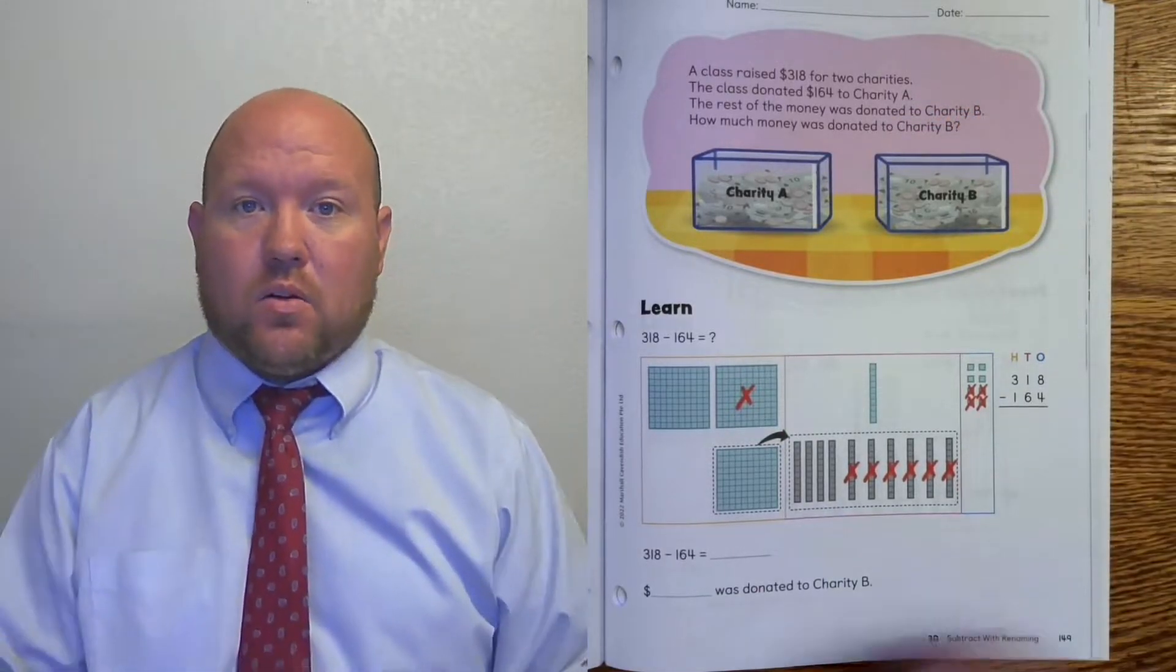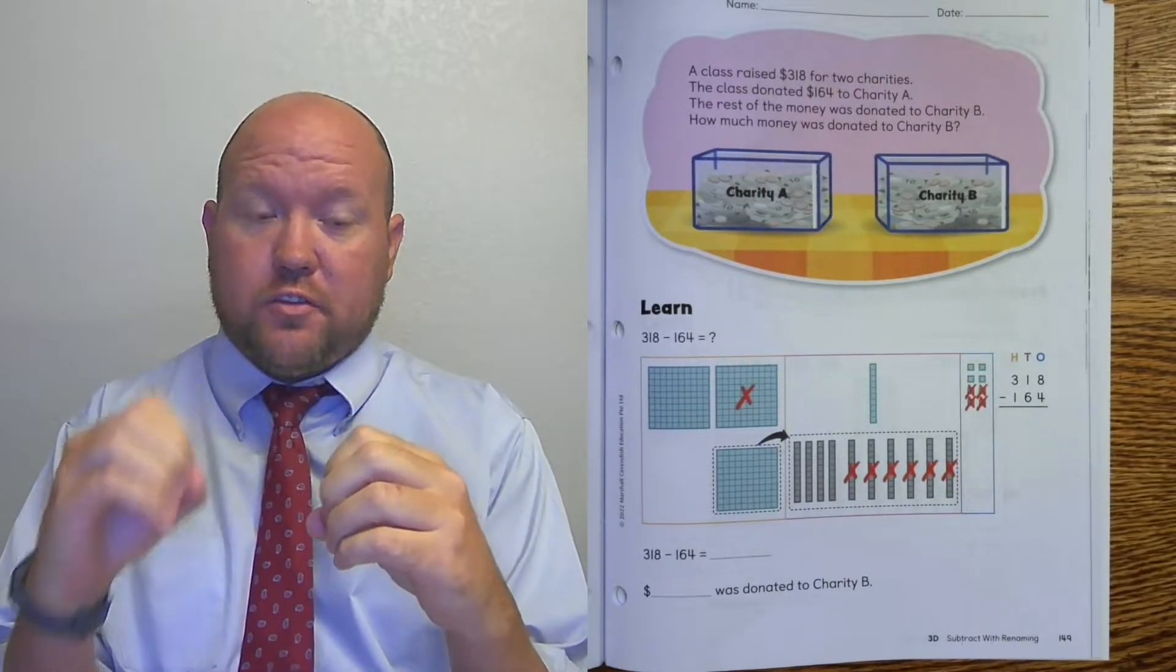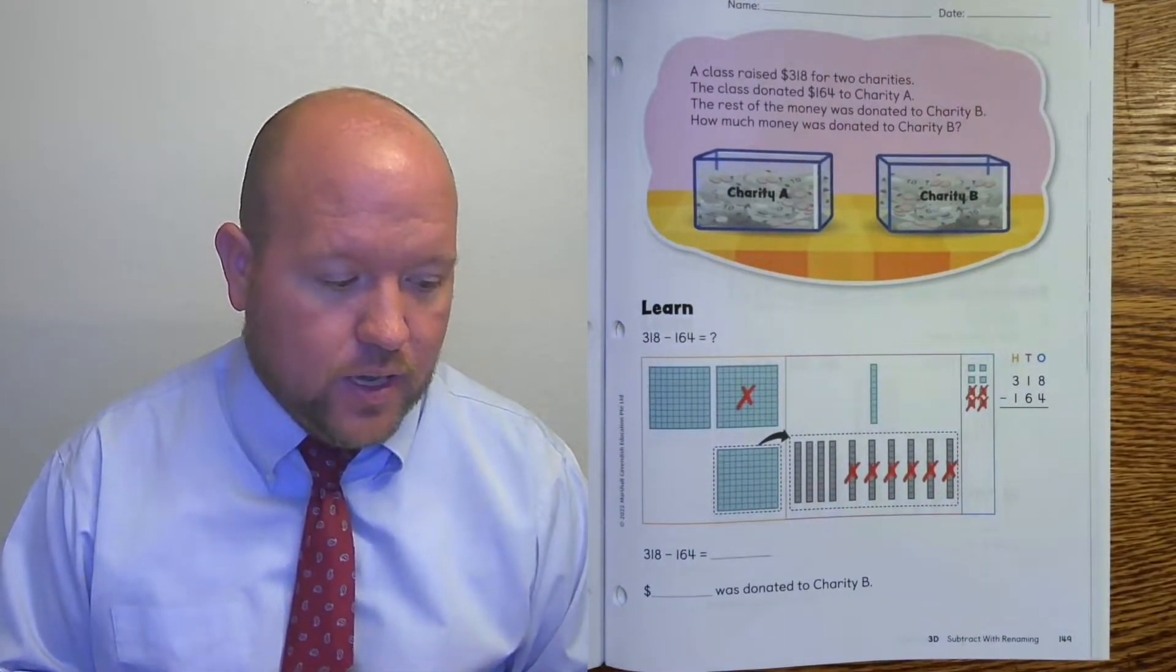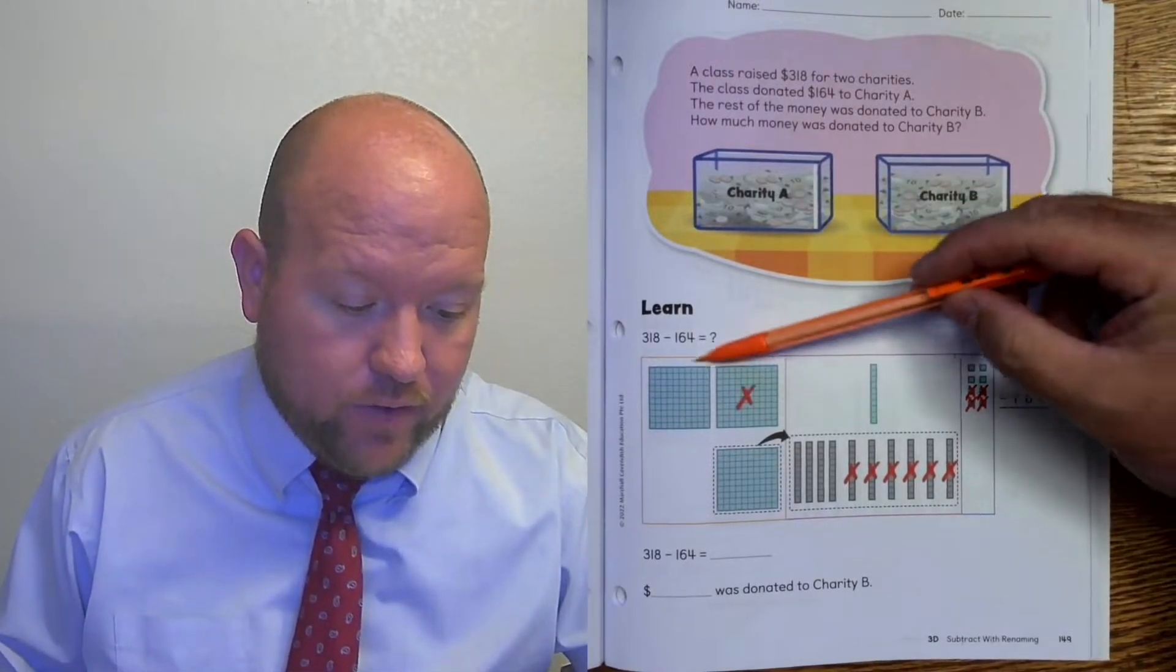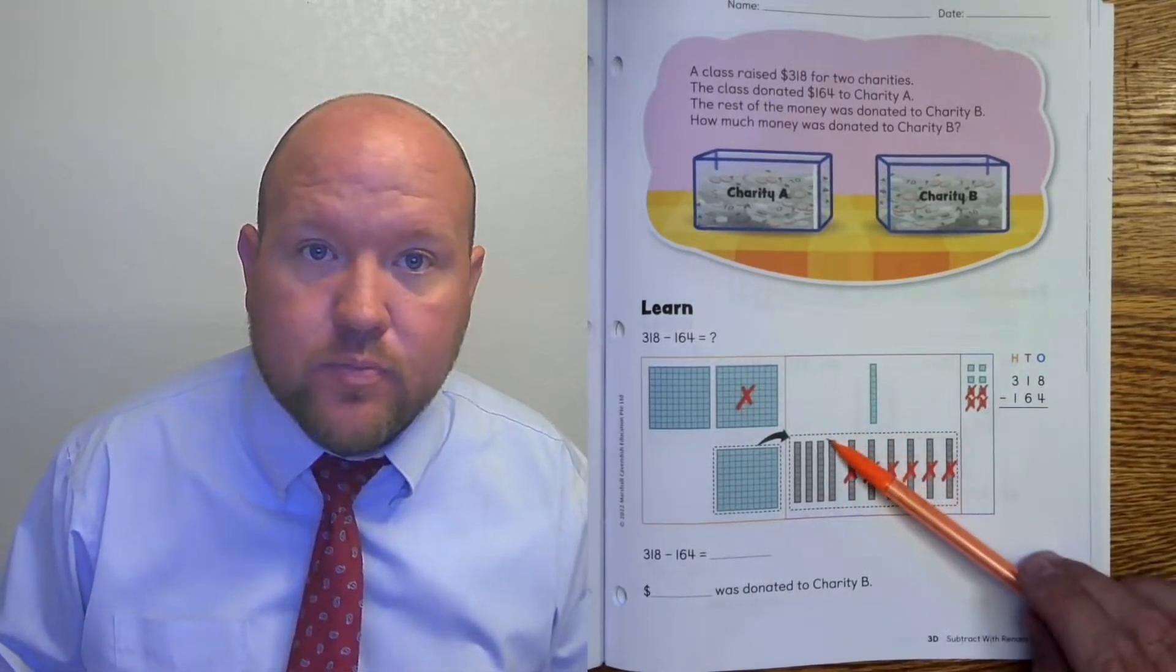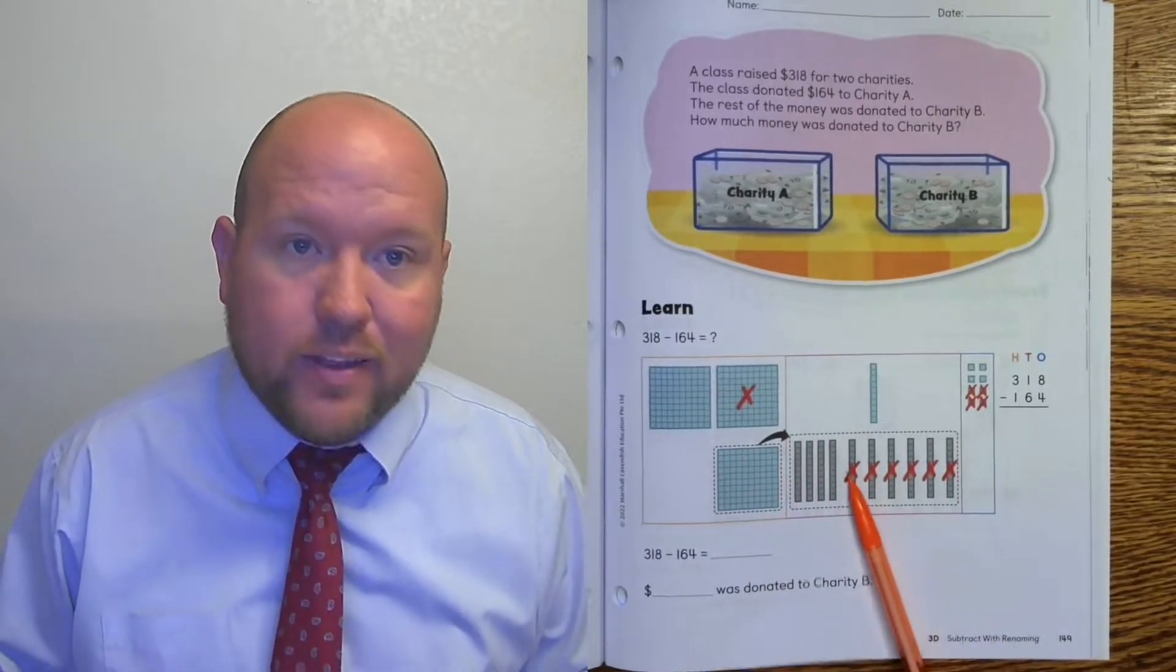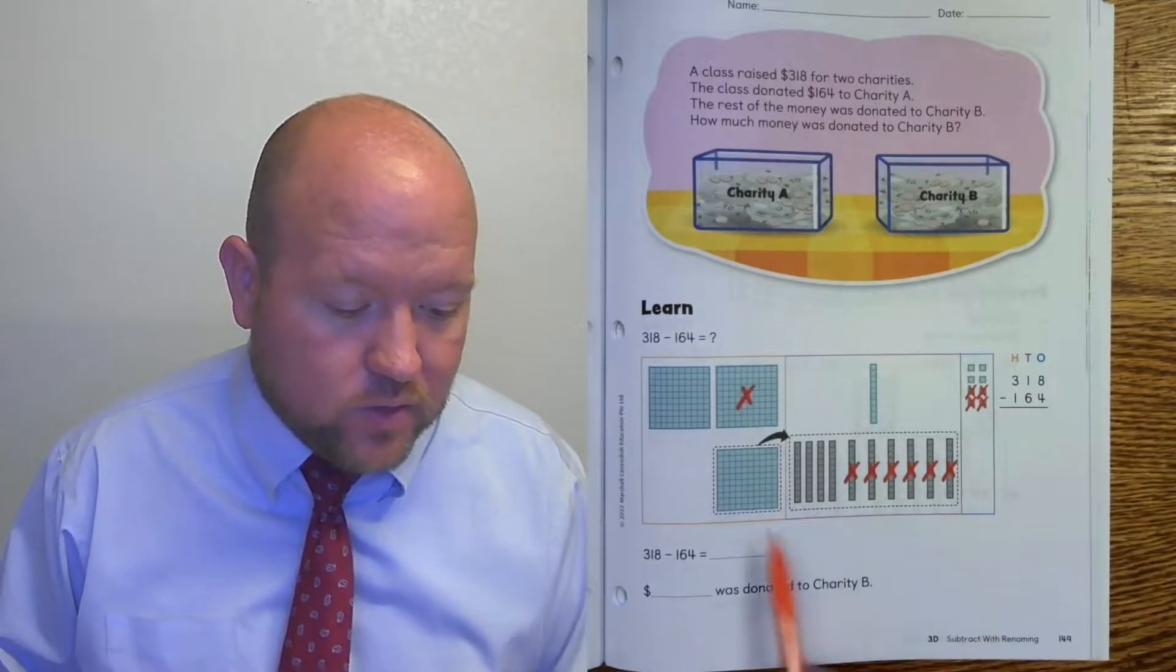So again here we have the whole and we have one of the parts, and so we use subtraction to find the missing part and that's what they've told us to do here. Again this is similar to what we did yesterday. So we see that we have our hundreds, we have our tens, and we have our ones. We have plenty of ones to subtract but we don't have enough tens and therefore we have to take a hundred and rename it as 10 tens in order to do this problem. So that's what we see here.